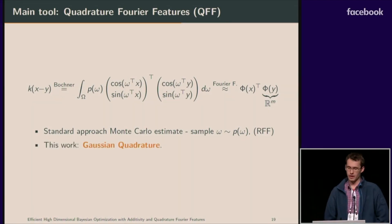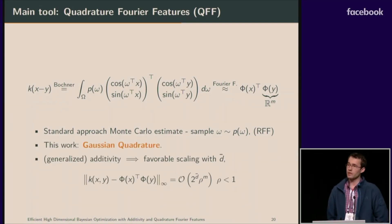In this work, however, we use Gaussian quadrature. Gaussian quadrature and our assumption of additivity causes that we have a favorable scaling with dimension and our error on the approximation decreases exponentially with the size of the finite sum.